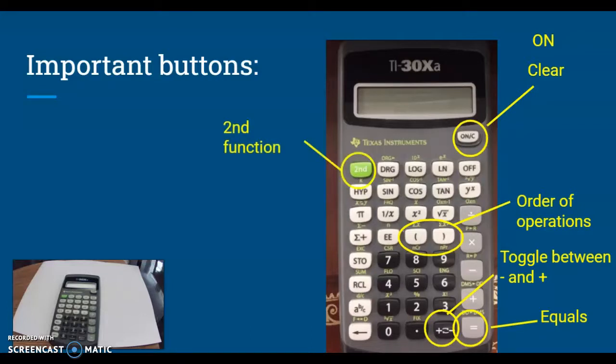And then that second function button. Notice all of the buttons across the top have their main function as the black writing on the white buttons. But above that, you see this yellowish-green function.